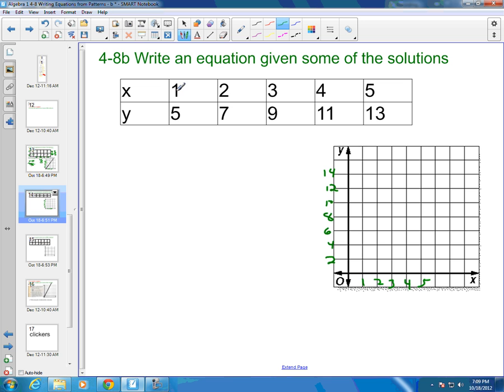So then I plot my points. 0, 15, that's over 1, up 5, so up to there. 2, 7; 3, 9; 4, 11; and 5, 13.